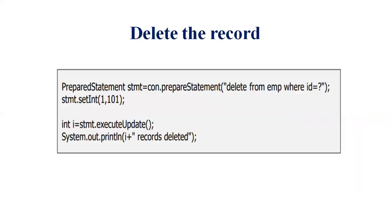Deleting a record: PreparedStatement stmt = con.prepareStatement with the SQL: delete from emp where id=?. Based on the id, we are deleting the record. We call stmt.setInt(1, 101) to set the id. Then int i = stmt.executeUpdate() executes the delete, and System.out.println(i + " records deleted") prints the result.